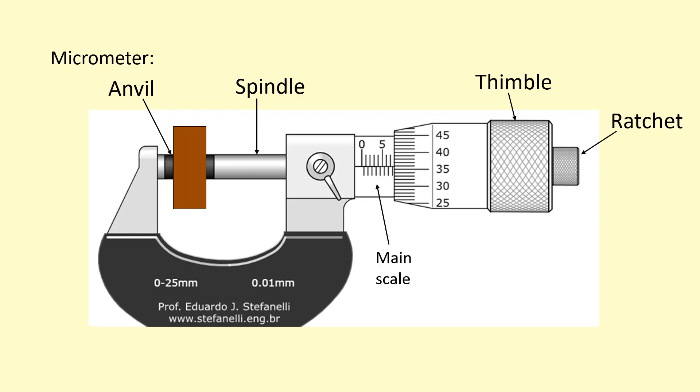Then you're ready to take the reading. First you read from the main scale, which gives you a number in millimeters. Then you switch to the thimble scale for a higher resolution reading.